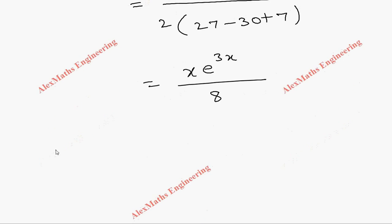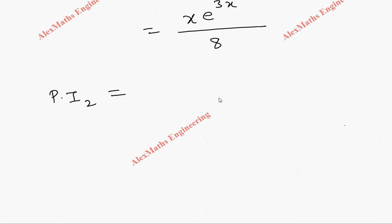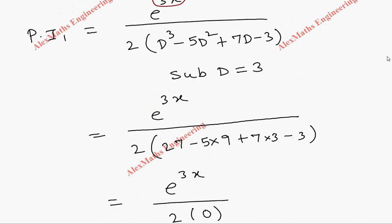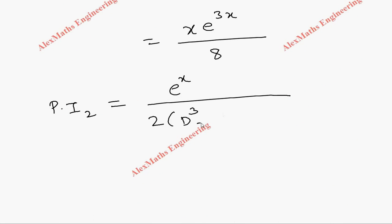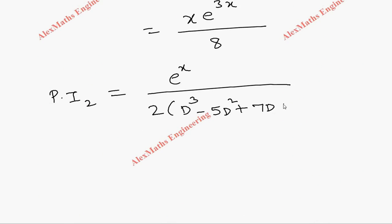In the same way, we find Particular Integral 2. For PI₂, we take the other term e^x/2 with the same denominator operator D³ - 5D² + 7D - 3. We substitute d = 1 since the coefficient of x in e^x is 1.